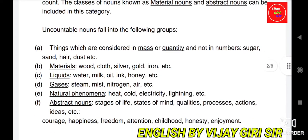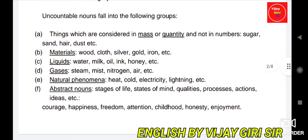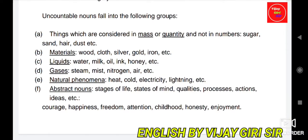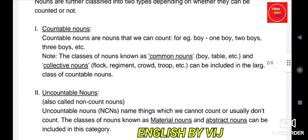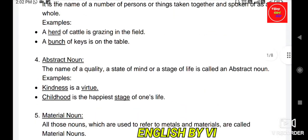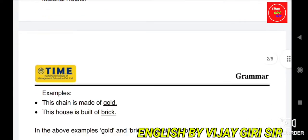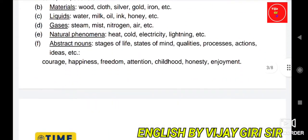Uncountable nouns fall into the following groups. First, things considered in mass or quantity, not in numbers — such as sugar, sand, hair, dust. These are measured in quantity. Sugar, for example, cannot be counted in numbers — it is impossible to count sugar individually.